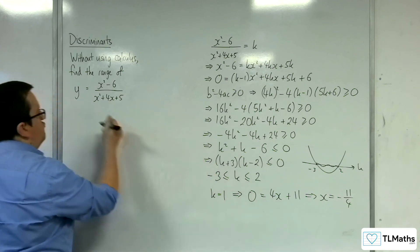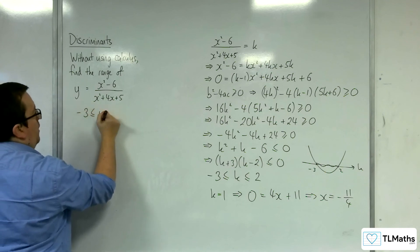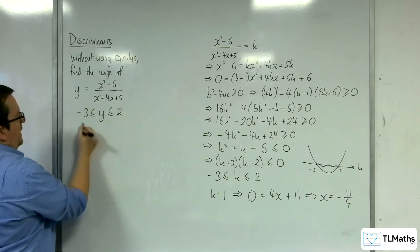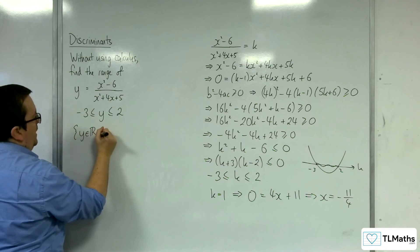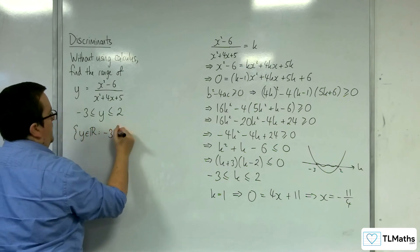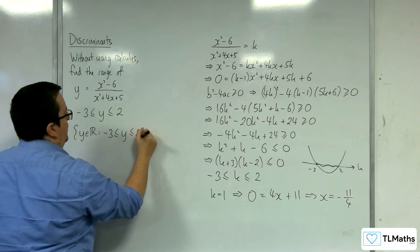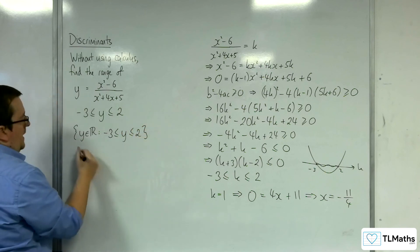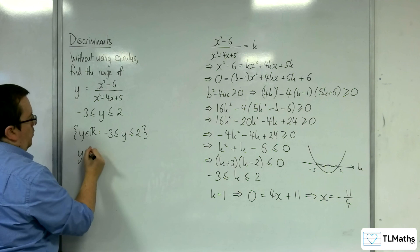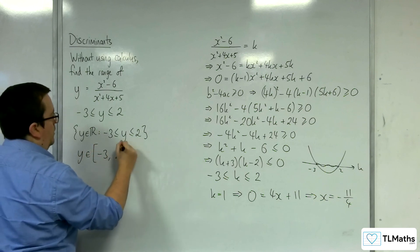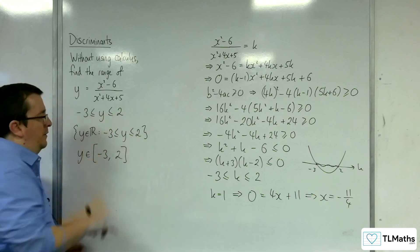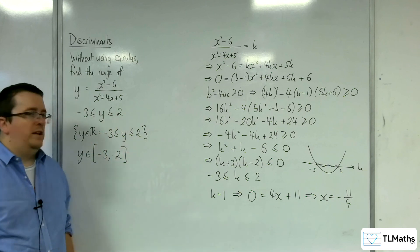So our range then will be minus 3 is less than or equal to y is less than or equal to 2. In set notation, y belongs to the real numbers such that minus 3 is less than or equal to y is less than or equal to 2. And in interval notation, y belongs to minus 3 comma 2 with square brackets, because we're including both ends of the inequality.